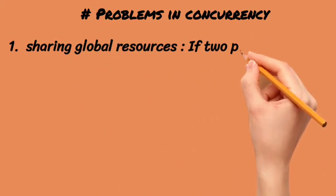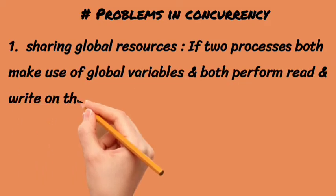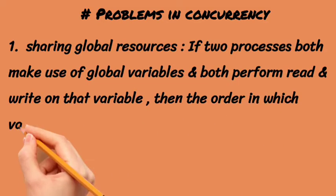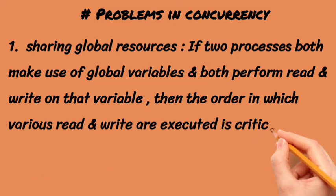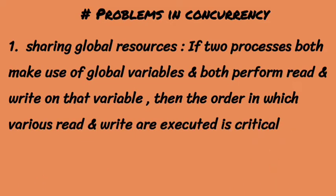There are some problems in concurrency. One is sharing global resources. If there are two processes using global variables, both doing read and write operations on the same variable, it is very difficult for execution.